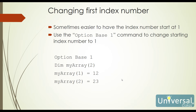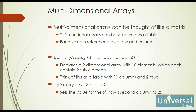Another way to change the first index number is to use what's called Option Base 1. This command allows us to start at 1 instead of 0. We just simply state Option Base 1, and then when we create an array, the array is going to start at index 1. In this case, if we dimension an array called myarray with two elements, because we used Option Base 1, our first index is 1 and our last index is 2. This makes it easier because the number of elements equals the highest index number.